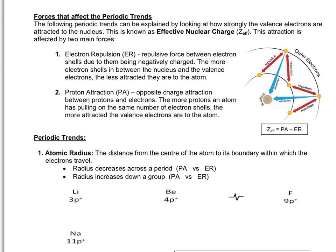Because electron shells contain electrons, which are all negative, they repel each other because they are the same charge. The more electron shells in between the nucleus and the valence electrons, the less attracted the valence electrons are to the atom. The second force is known as proton attraction. Because the nucleus is positively charged overall due to the amount of protons, it has an opposite charge attraction to all the electrons on the atom. The more protons an atom has, pulling on the same number of electron shells, the more attracted the valence electrons are to the atom.